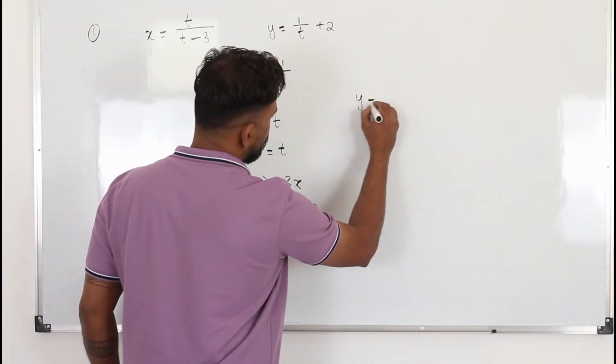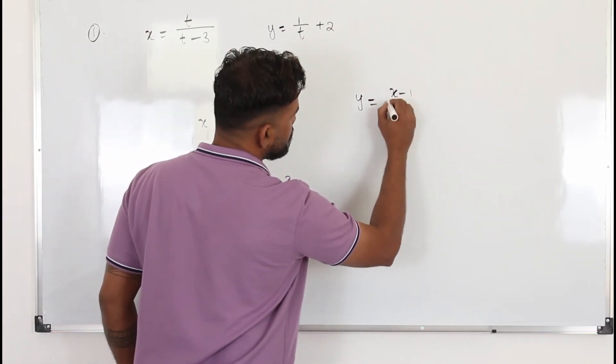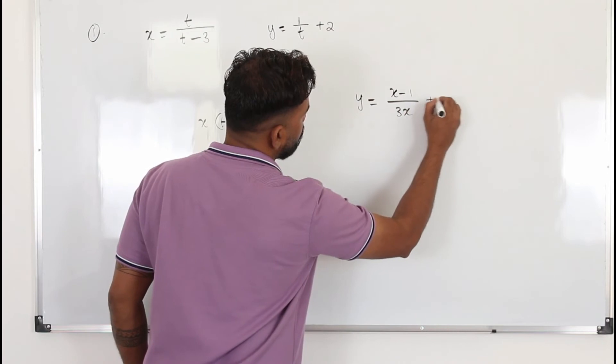So y is equal to 1 over t. 1 over t is going to be the reciprocal of this, plus 2.